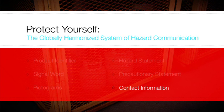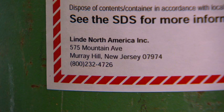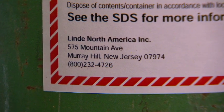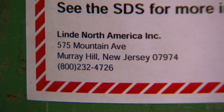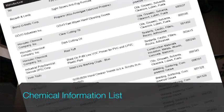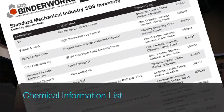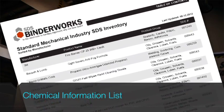The contact information on the label lists the chemical manufacturer, importer, or other responsible parties' name, address, and telephone number in case you need to contact them for any reason related to that chemical. If you need more information or have a question not answered on the chemical label, the next step is to go to your company's hazard communication program and find the chemical information list. This is an inventory of all the chemicals used on the job site, and it has a number, letter, or other symbol that directs you to the right SDS.